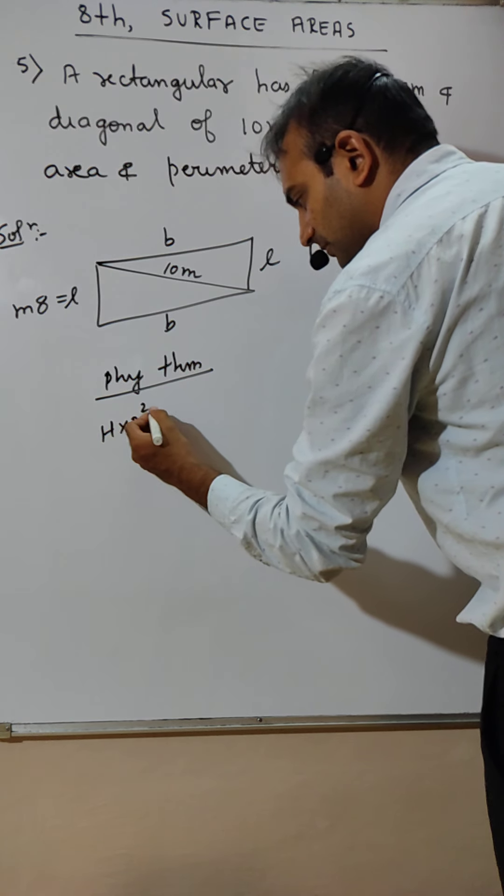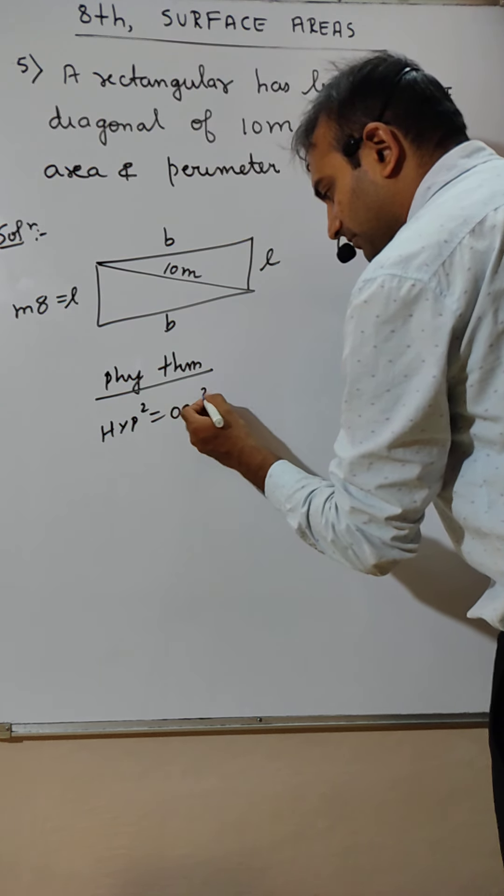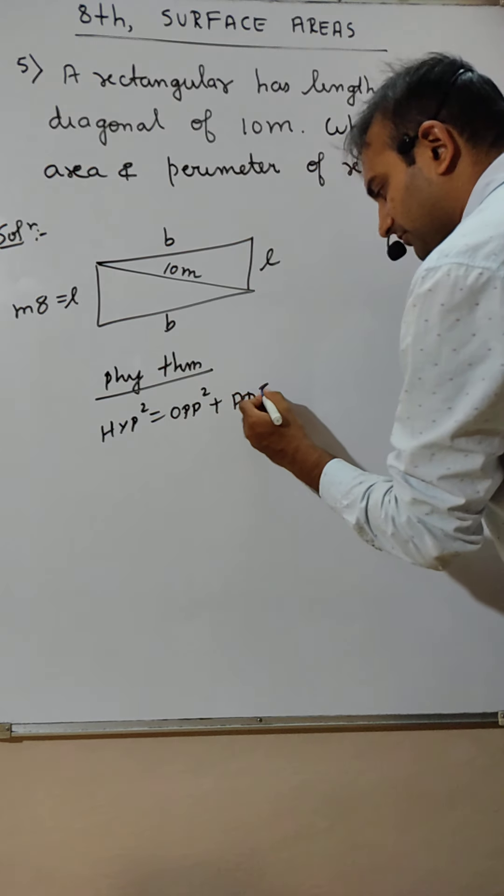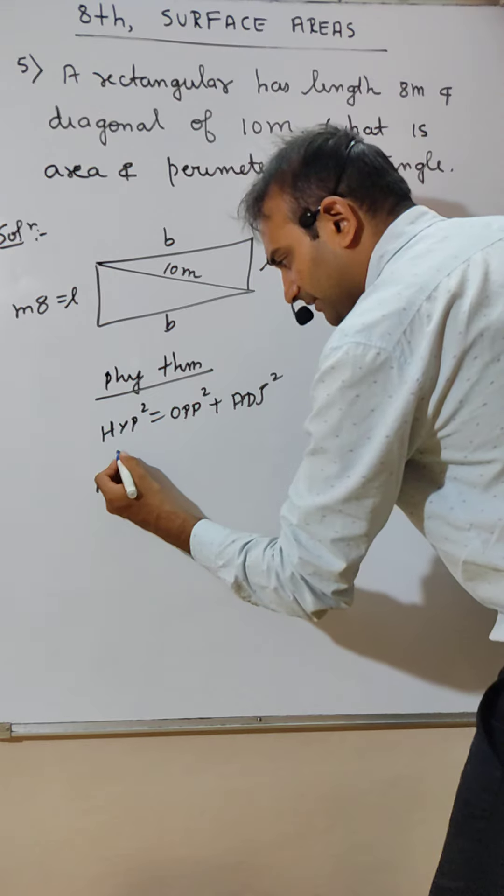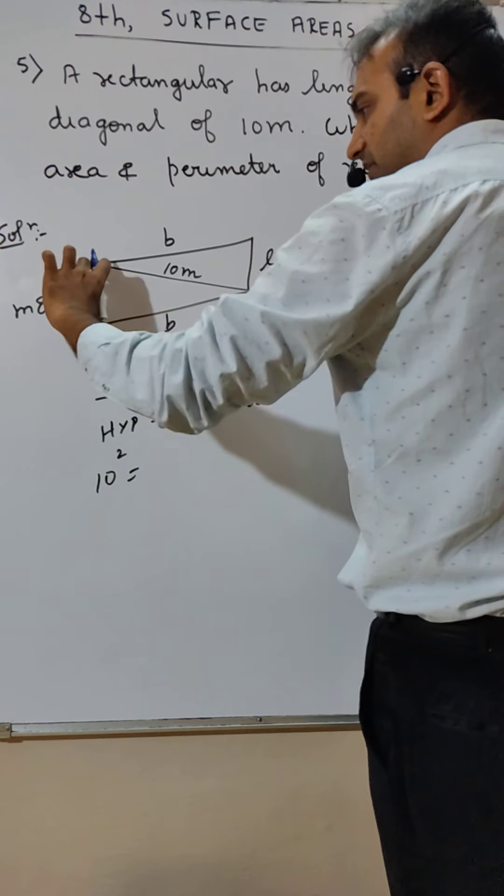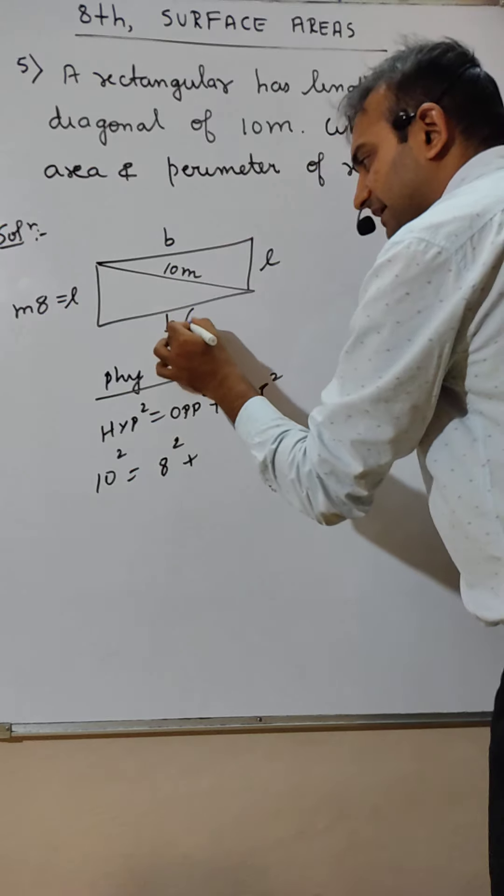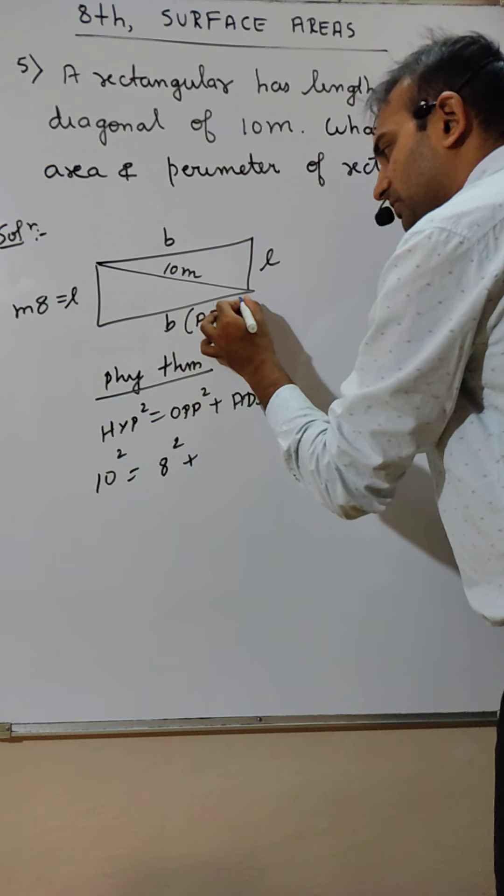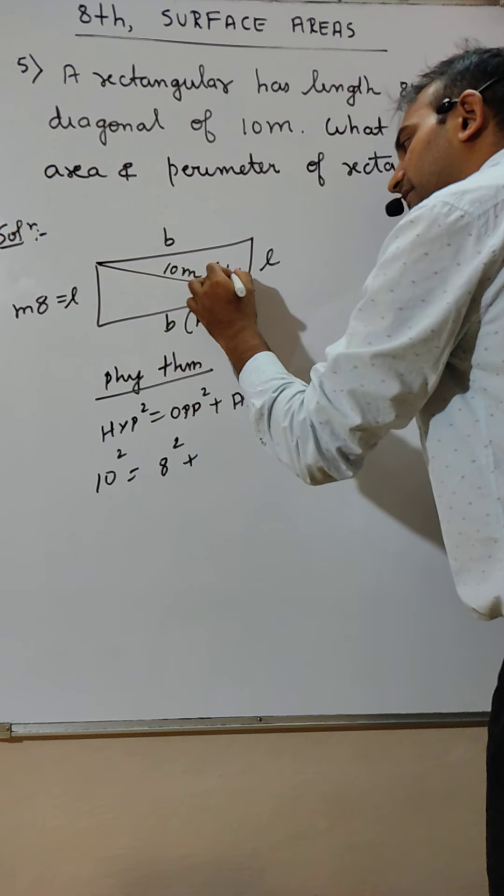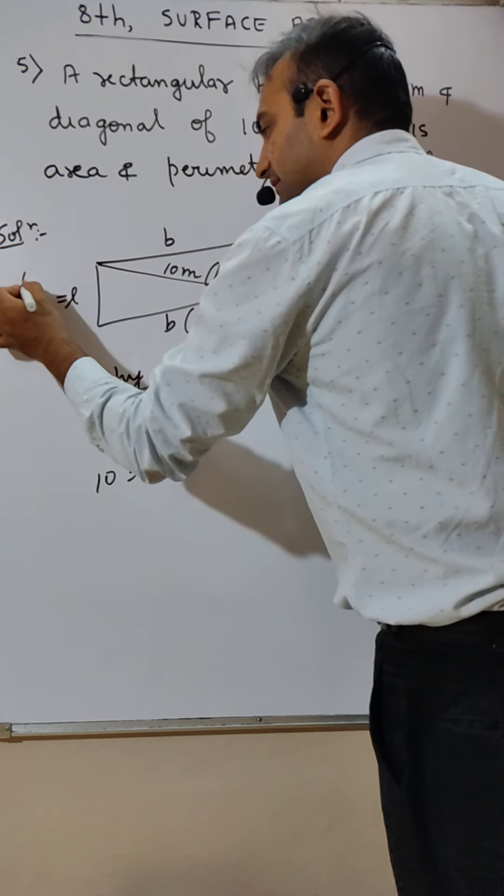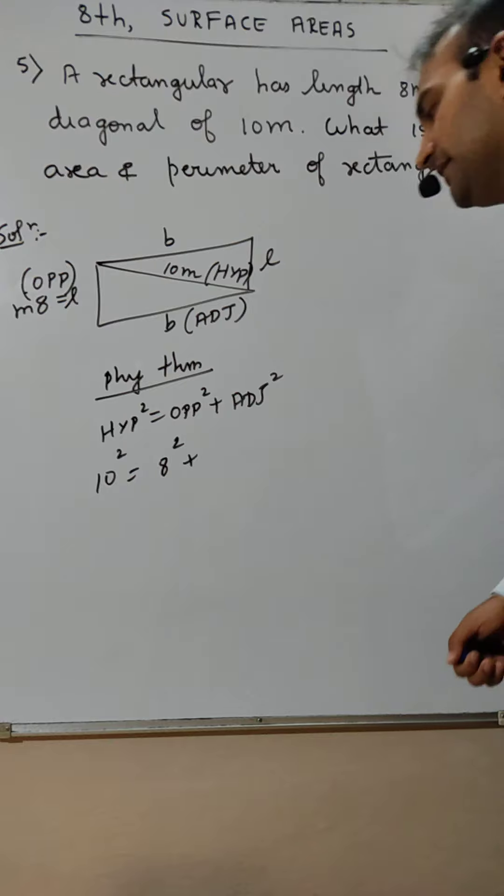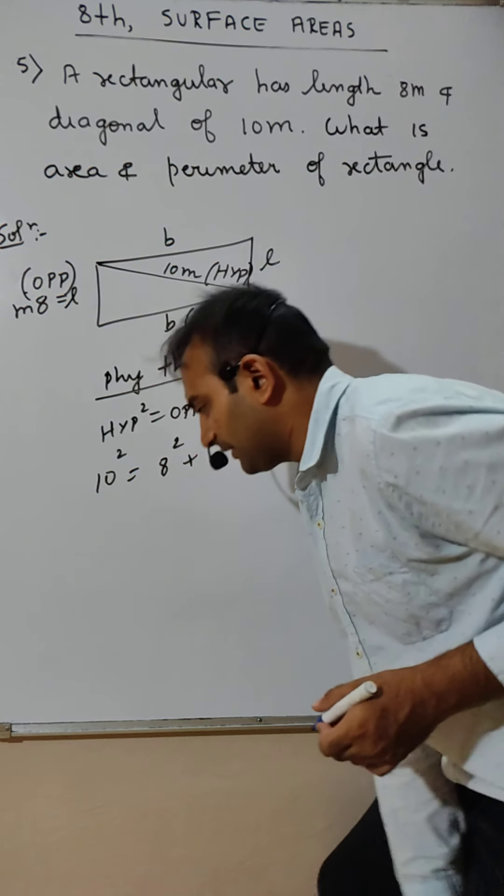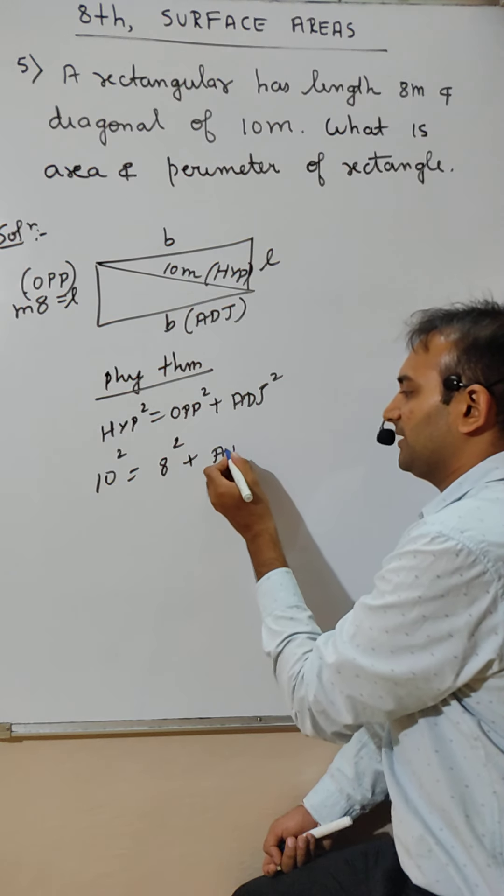Hypotenuse ka square is opposite ka square plus adjacent ka square. Where hypotenuse is 10 ka square. Opposite is 8 ka square. This is adjacent. Correct or no? This is hypotenuse. Kya done nahi re? This is opposite. Kya humne ye sab kiya tha nahi re? Correct? Adjacent ka square.